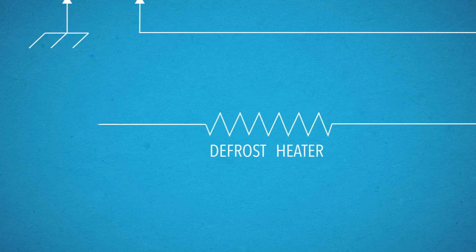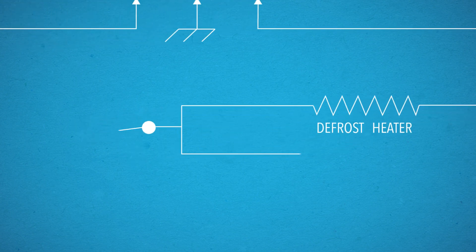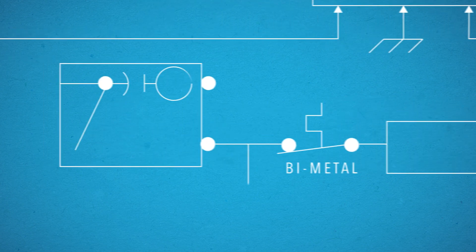If your refrigerator is too warm but the freezer section is cold, you'll want to look for this symbol, the defrost heater. It's connected to a thermostat. That symbol looks like this. It's also connected to a timer. Look for this symbol.